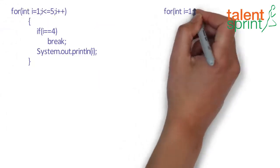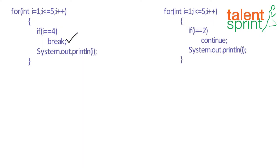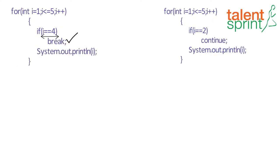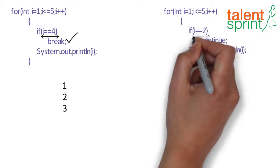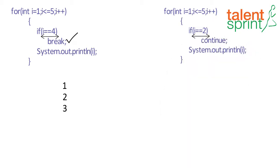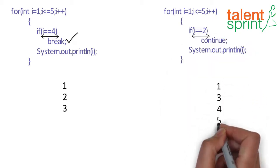In the first case, we are breaking the loop when i is equal to 4, hence the output will be this. While in the second case, we continue to the next iteration when i is equal to 2, so the output would look like this.